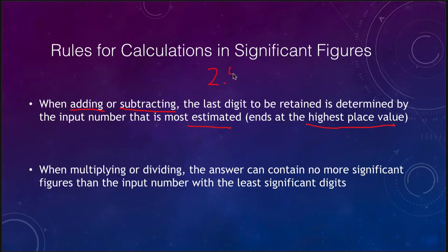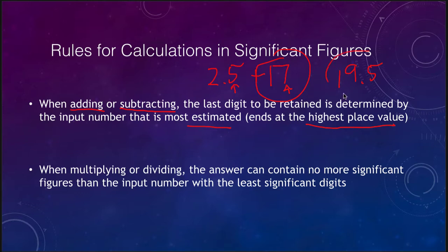For example, if you add 2.5 plus 17, you first add them to get 19.5. But 2.5 ends at the tenths place while 17 ends at the ones place. You cannot go beyond the most estimated number, so your answer has to stop at the ones place. Therefore 19.5 becomes 20. with the decimal point specified to indicate two significant figures — without the decimal point it would look like only one significant figure.